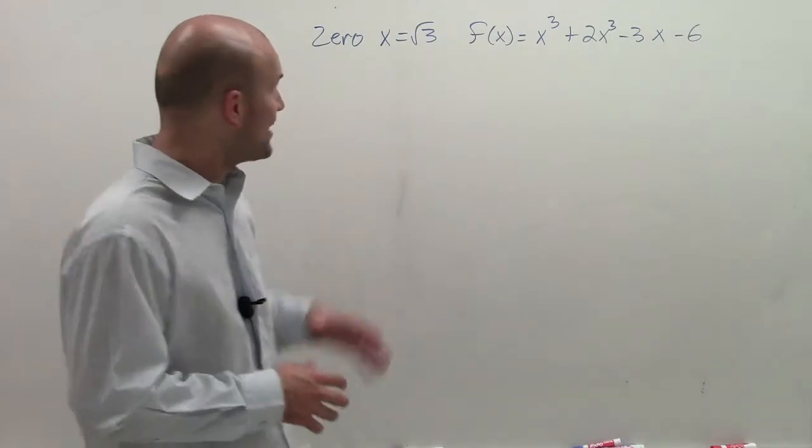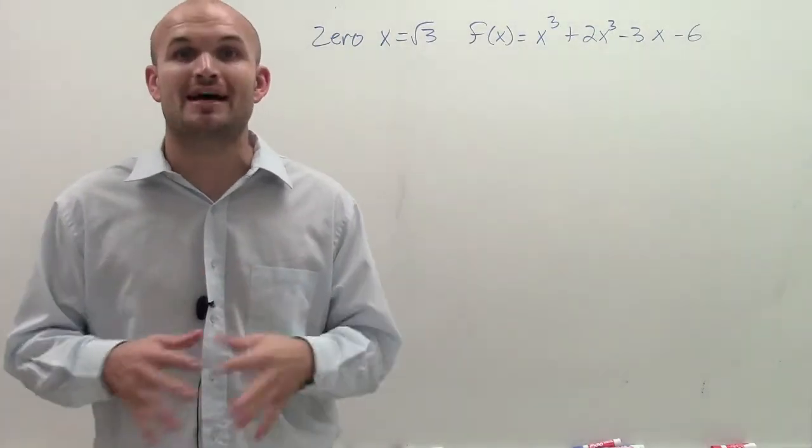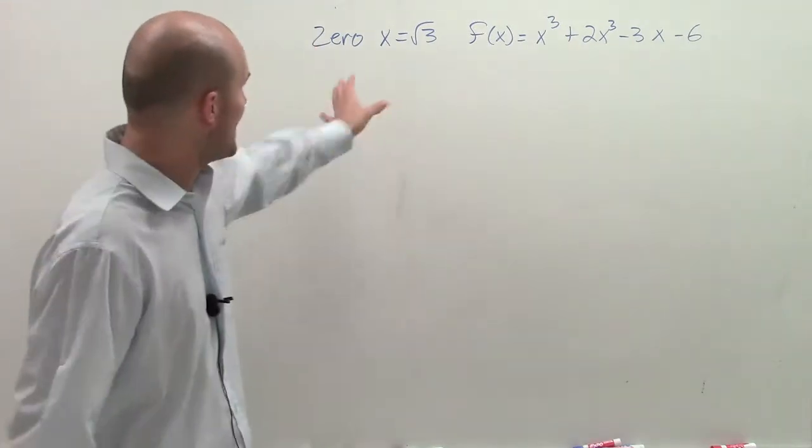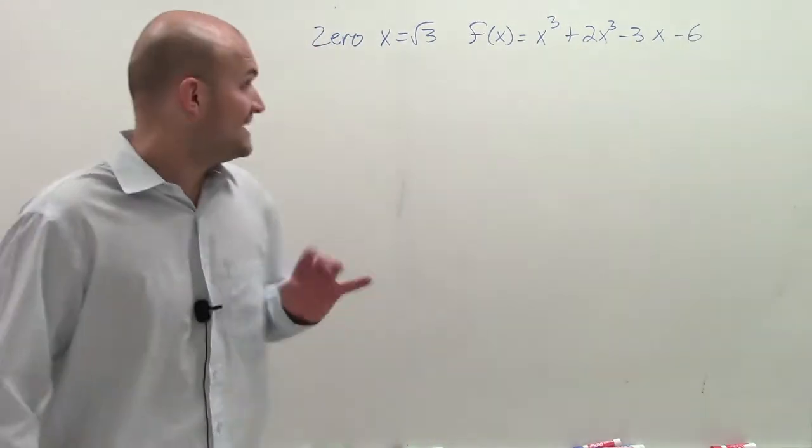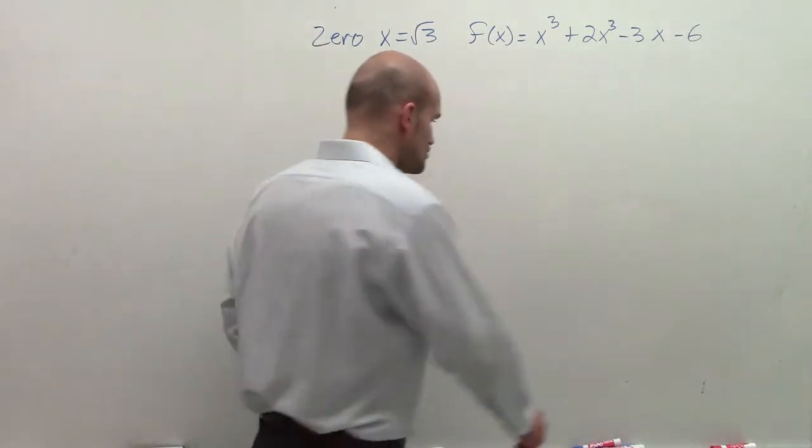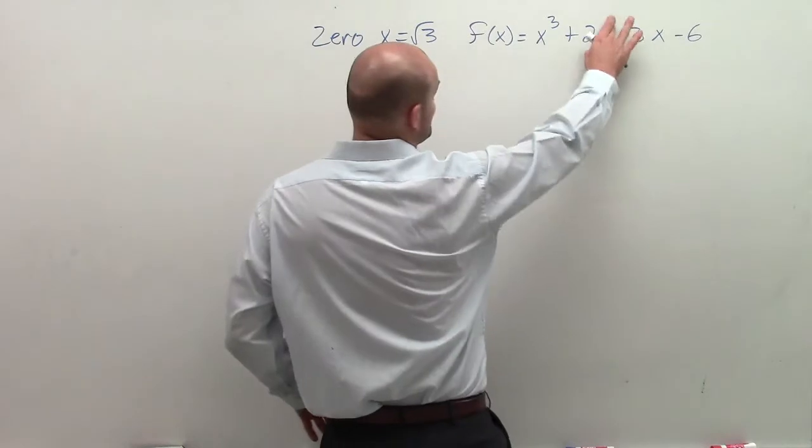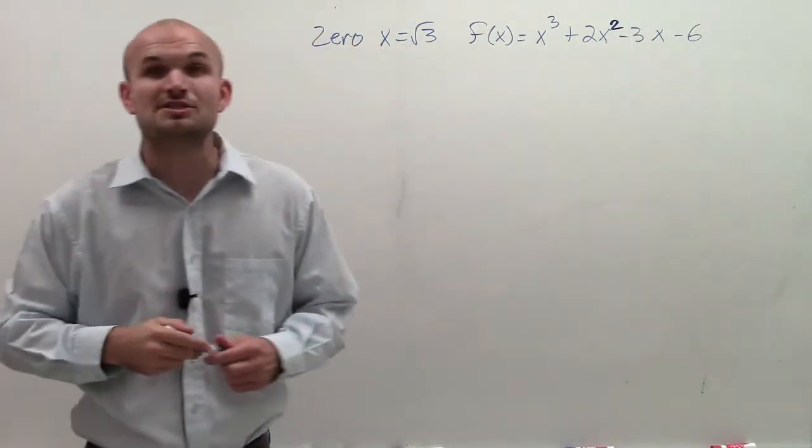Welcome. What I want to do in this problem is show you how to determine, if we're given one zero, how to find the rest of our zeros. So what I have is a zero, and they say that zero is x equals the square root of 3. Next, they say our function is x cubed plus 2x squared minus 3x minus 6.